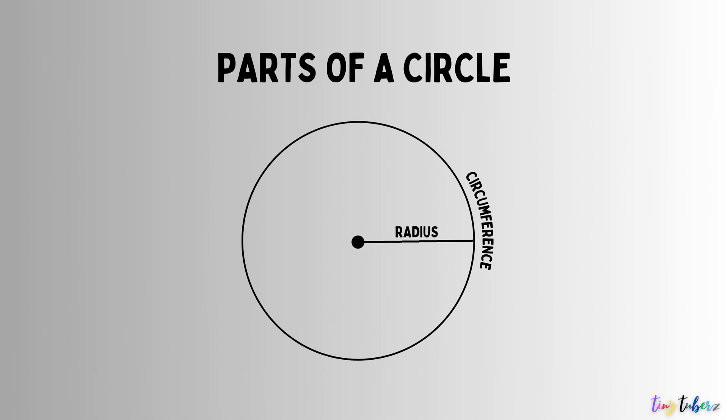Radius. The radius of a circle is the distance from the center to any point on the circumference. It is typically denoted by the letter R. The radius is half the length of the diameter and is used to measure the size of the circle.